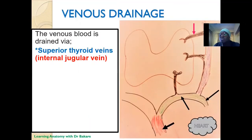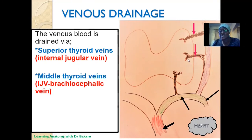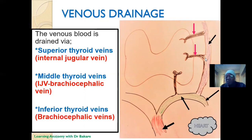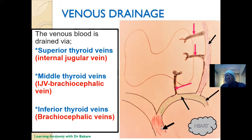Venous drainage occurs through three vessels: the superior thyroid vein, the middle thyroid vein — both draining into the internal jugular vein — and the inferior thyroid vein, which drains into the brachiocephalic vein. The brachiocephalic vein drains into the superior vena cava, which joins with the inferior vena cava to form the vena cava, finally draining into the right atrium of the heart.